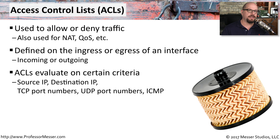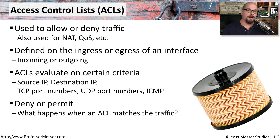Access control lists evaluate traffic on a number of different criteria, very similar to what a firewall might do. An access control list would evaluate a source IP address, a destination IP address, and a port number in use, then decide whether to allow or deny that traffic through the router. Like a firewall, there's usually a list of rules, and the router follows that list until the traffic matches one of the rules.